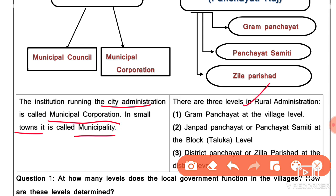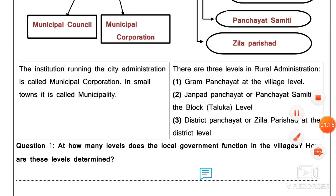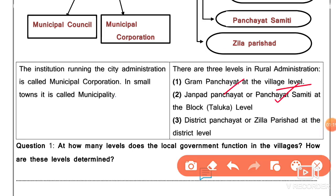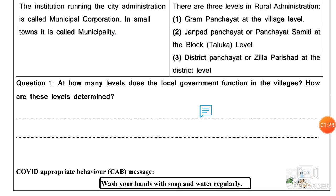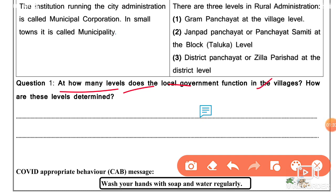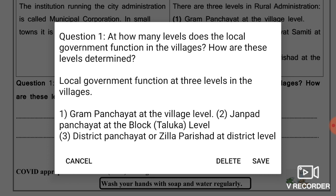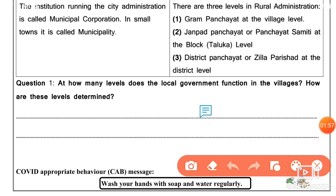In rural administration, local government functions at three levels in villages: village level with Gram Panchayat, block level with Panchayat Samiti, and district level with District Panchayat. Today's worksheet is complete. Thank you for watching, bye bye guys.